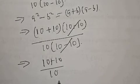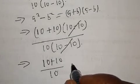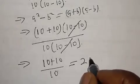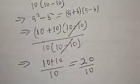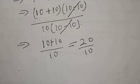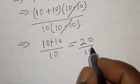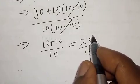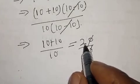10 plus 10 over 10. And 10 plus 10 is equal to 20, which is equal to what? 20 over 10. Let's divide. This 0 will cancel this 0. We are left with 2 divided by 1 is 2.